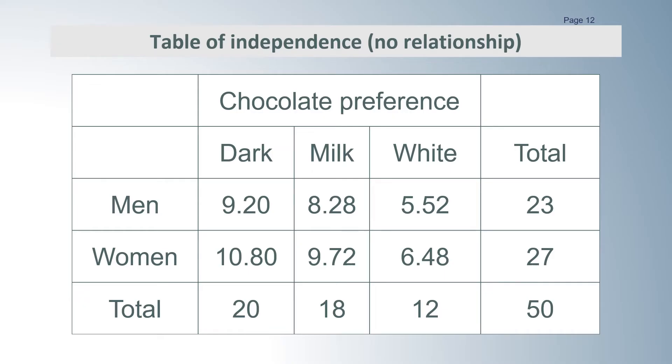You can see that the numbers for the women are all a little bigger than the numbers for the men because our sample had a few more women than men. If the numbers had been equal, then the row values would also have been equal.